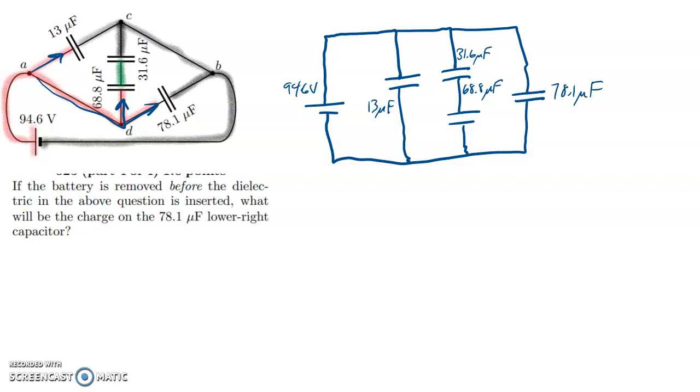Okay. So to answer this question, I think it was number 25, really the first thing we have to do is we have to figure out before the dielectric was inserted, what is the total amount of charge in this circuit? Because when you remove a battery, that traps the charge. And so the total amount of charge has to stay the same. There's nowhere else it can go.